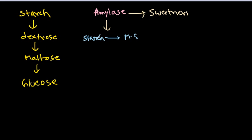There are two types of amylase: alpha amylase and beta amylase. Alpha amylase breaks down starch into glucose, while beta amylase is mainly used for production of maltose syrup, which is a very important ingredient in many different industrial food productions.